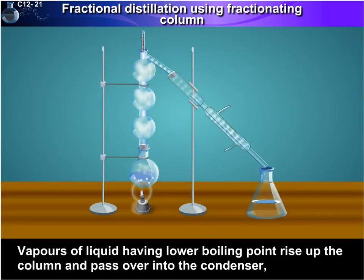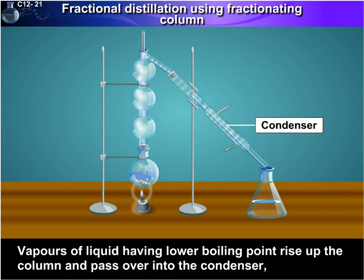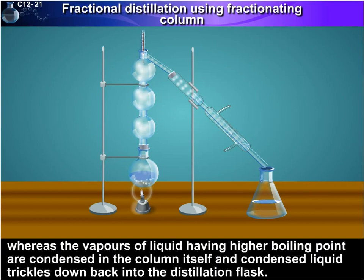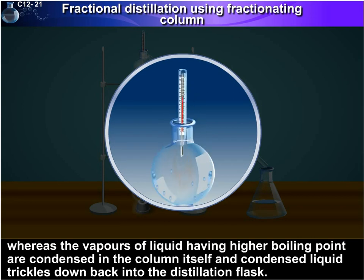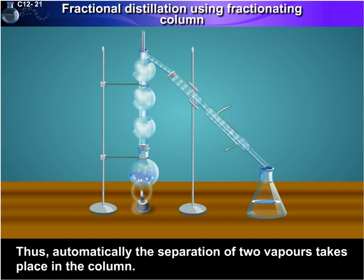Vapours of the liquid having a lower boiling point rise up the column and pass over into the condenser. Whereas the vapours of the liquid having a higher boiling point are condensed in the column itself, and the condensed liquid trickles back down into the distillation flask. Thus, automatically the separation of the two vapours takes place in the column.